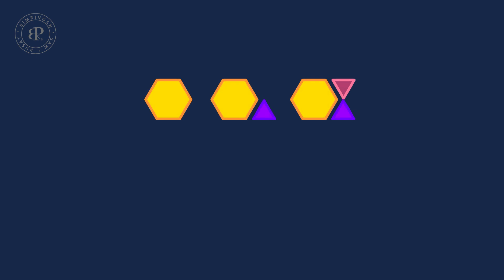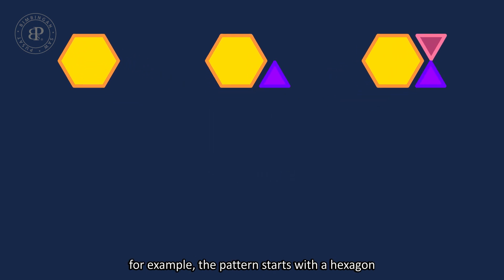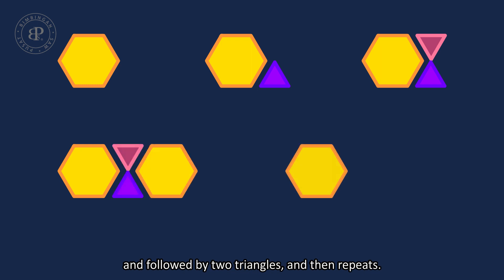What about this? This set of geometrical shapes is a sequence because it follows a particular pattern. For example, the pattern starts with a hexagon followed by two triangles, and then repeats.